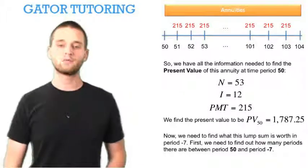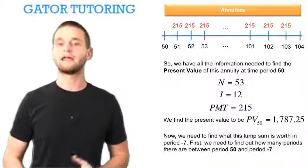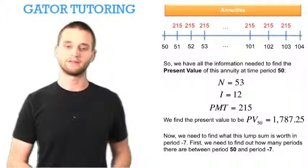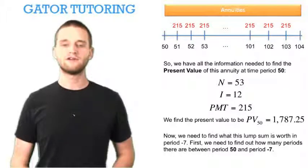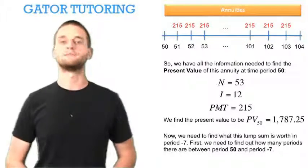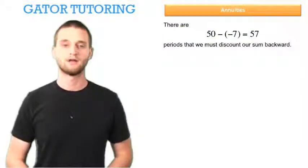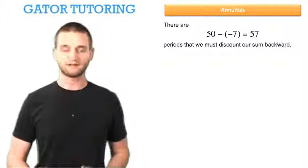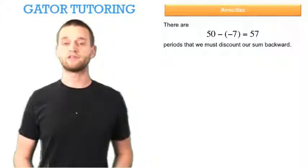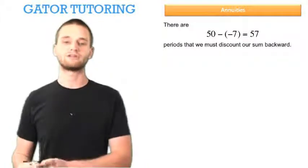Now we need to find what this lump sum is worth in period negative 7. First, we need to find out how many periods there are between period 50 and period negative 7. There are 50 minus negative 7, which is 57 periods that we must discount our sum backward.